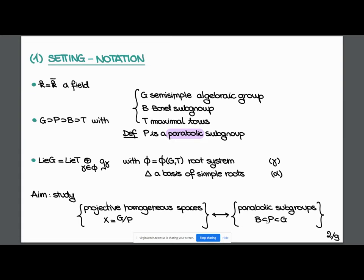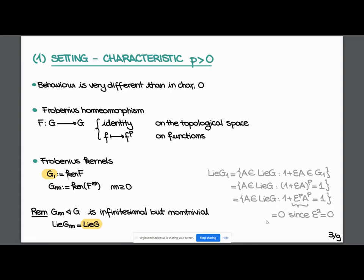The aim is to study projective varieties which are homogeneous under G action. This translates to the study of parabolic subgroups. Since each parabolic is conjugate to one containing B, we can fix the Borel subgroup and just study parabolics that contain B. Something about prime characteristic: the behavior is not the same as we're used to, mostly because of the Frobenius homomorphism.